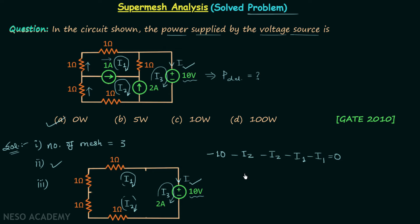Simplifying that KVL equation gives us I1 plus I2 equal to minus 5. We call this Equation 1. We have three unknowns — I1, I2, and I3 — and Equation 1 contains I1 and I2, so we need more equations to find I3.